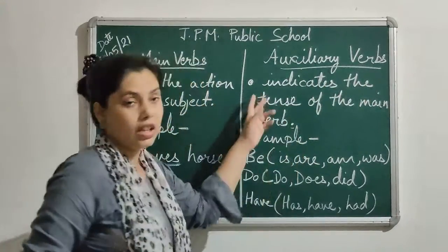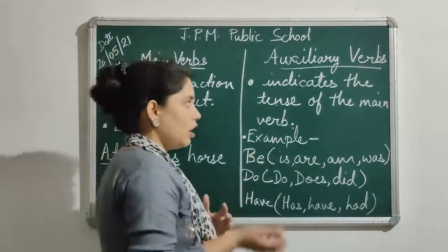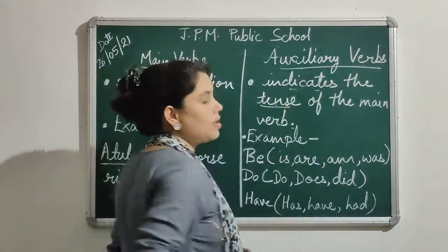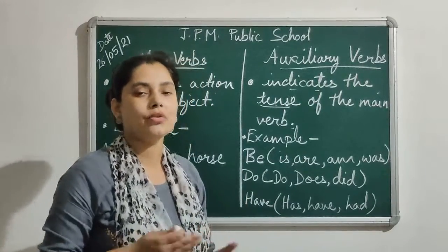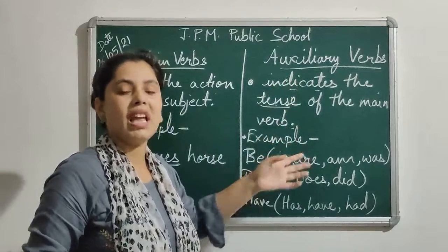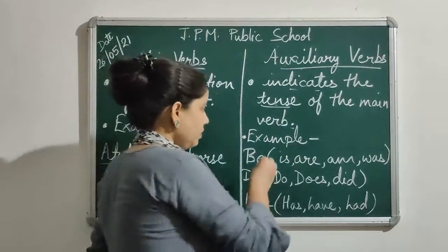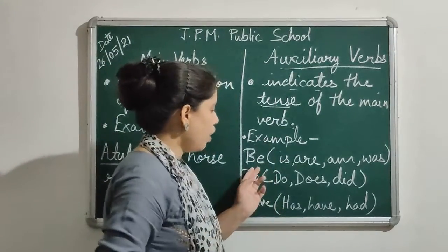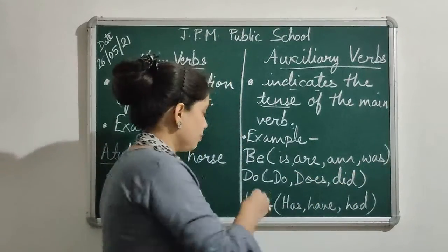Auxiliary verbs indicate the tense of the main verb. As it is written clearly, auxiliary verbs are the verbs which are used to indicate the tense — the time of happening of an event or the action which is being carried. The auxiliary verbs tell us when the main verb is carried forward. For example, 'be' verbs consist of: is, are, was, and were.